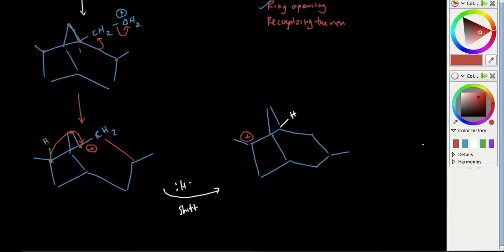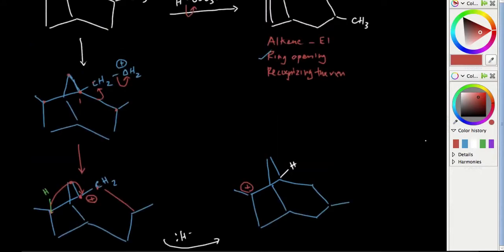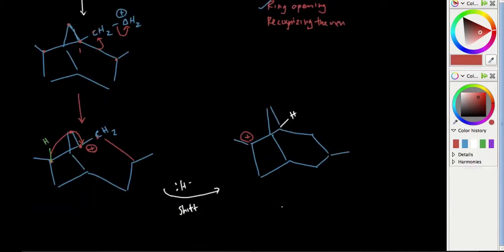Now I know that I have the carbocation at the right position. From here it's just really straightforward dehydration. After you form the carbocation at the right position, just deprotonate an adjacent hydrogen to form your alkene.